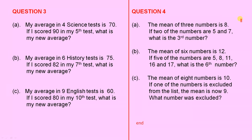Question 4, Part A: The mean of 3 numbers is 8. If 2 of the numbers are 5 and 7, what is the 3rd number?